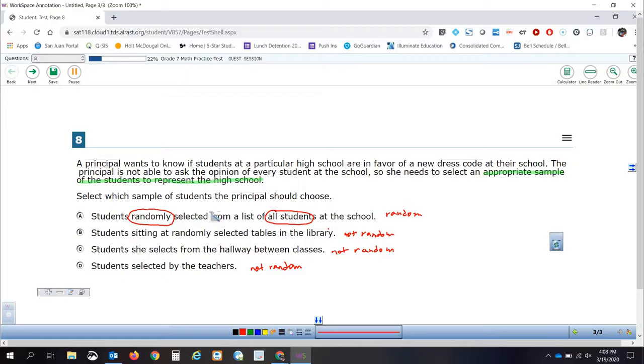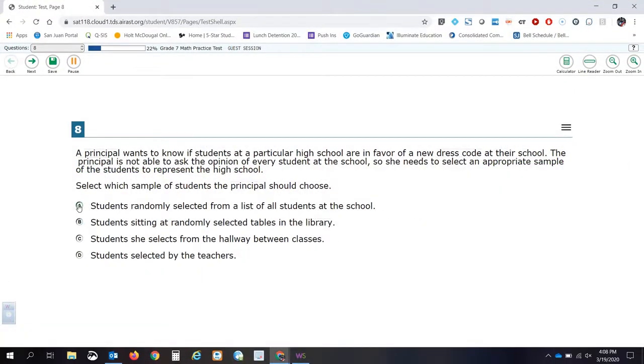Out of our choices, only the first one is random and the other ones are not random. These would be good if you wanted to know the opinion of students that teachers are likely to pick, students who are in the hallways between classes, certain hallways, and students who hang out in the library. But if you truly want to represent a sample of the entire high school, then you want to go with random students in the whole school. So we're going to choose A and move on to the next question.